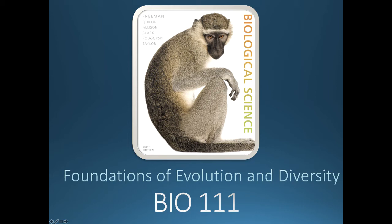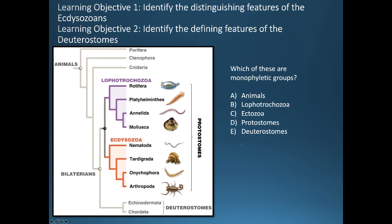Hello everyone and welcome to today's video podcast for Evolution and Diversity. This will be the second video on animal diversity. Today we're going to talk about two objectives. The first is to distinguish the features of the ecdysozoans, and the second objective is to talk about the defining features of the deuterostomes.